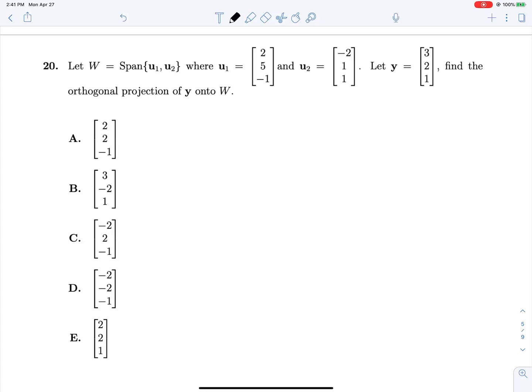Problem 20: W is the span of U1 and U2, given here. Let's find the orthogonal projection of Y onto W. The orthogonal projection of Y onto W will be given by Y dot U1 over U1 dot U1 multiplied by the vector U1 plus Y dot U2 over U2 dot U2 multiplied by the vector U2. Let's start computing everything and filling in our values. Y dot U1 will be 6 plus 10 minus 1, so 15, and we're dividing by U1 dot U1, which is 25 plus 4 plus 1, which is 30.